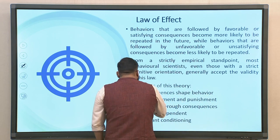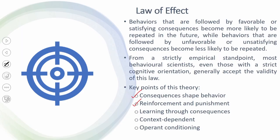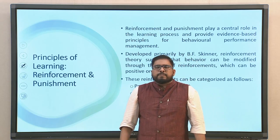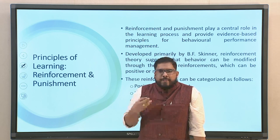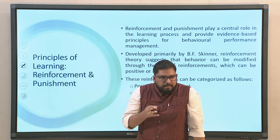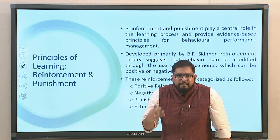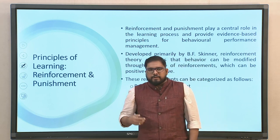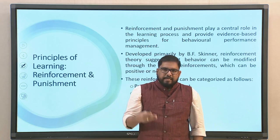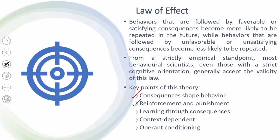Reinforcement and punishment play a central role in the learning process and provide evidence-based principles for behavioural performance management. Reinforcement theory, developed by Skinner, suggests that behaviour can be modified through the use of reinforcements, which can be either positive or negative. There are also punishment and extinction. Learning through consequences is essentially an extension of how consequences shape behaviour — once consequences shape behaviour, you tend not to repeat the same behaviour the next day.